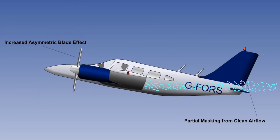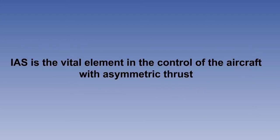Any weight increase will require a higher angle of attack at any given speed. This will have the result of increasing asymmetric blade effect with a bigger yawing moment, and partially masking the fin and rudder, making them less effective. Ultimately, the most important element in the control of the aircraft under asymmetric conditions is dynamic pressure, which is a measure of the calibrated airspeed, CAS, which is in turn indicated airspeed, IAS, corrected for position error. IAS is of course what the pilot sees on his airspeed indicator. Higher IAS means more control effectiveness, and consequently greater rudder movement, all other parameters being unchanged.